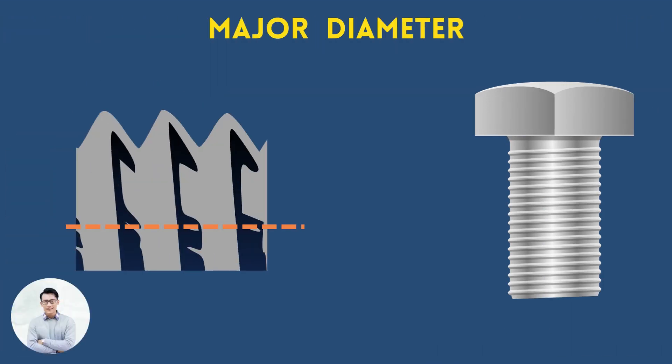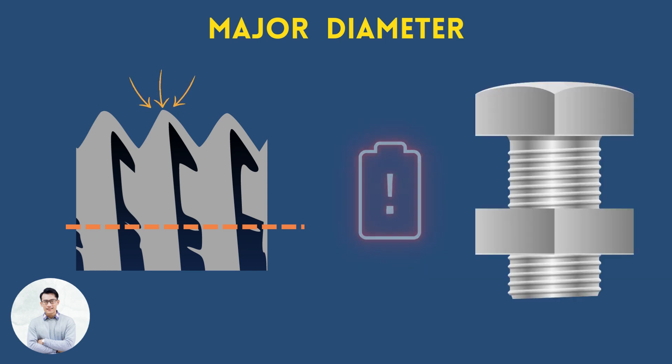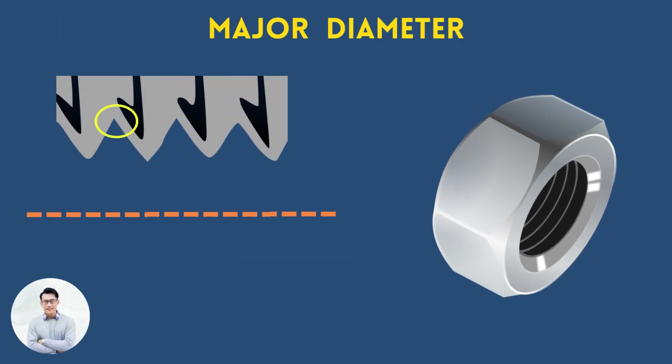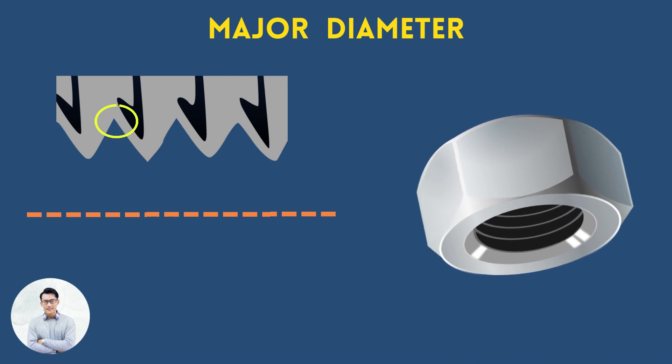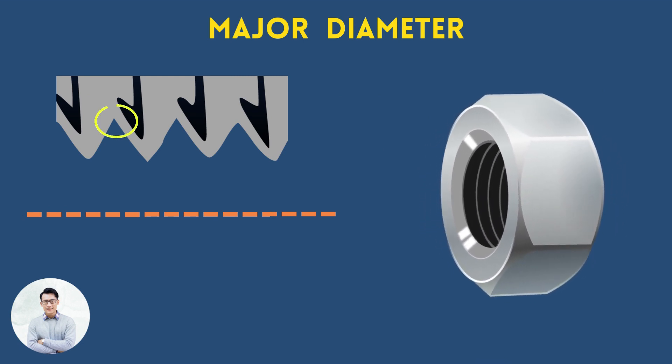In external threads, the major diameter is measured on the crest, and it is a critical dimension to control, since it influences whether the screw would fit on a bolt. In internal threads, the major diameter is measured on the root. It is not a critical dimension and must only be larger than the nominal thread diameter.